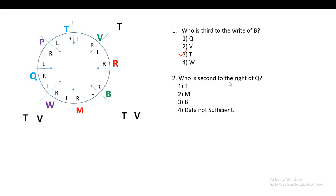The second question: who is second to the right of Q? First locate Q, then move two places in the anti-clockwise direction — one and two. That gives M. So M is second to the right of Q, and the correct option is M.